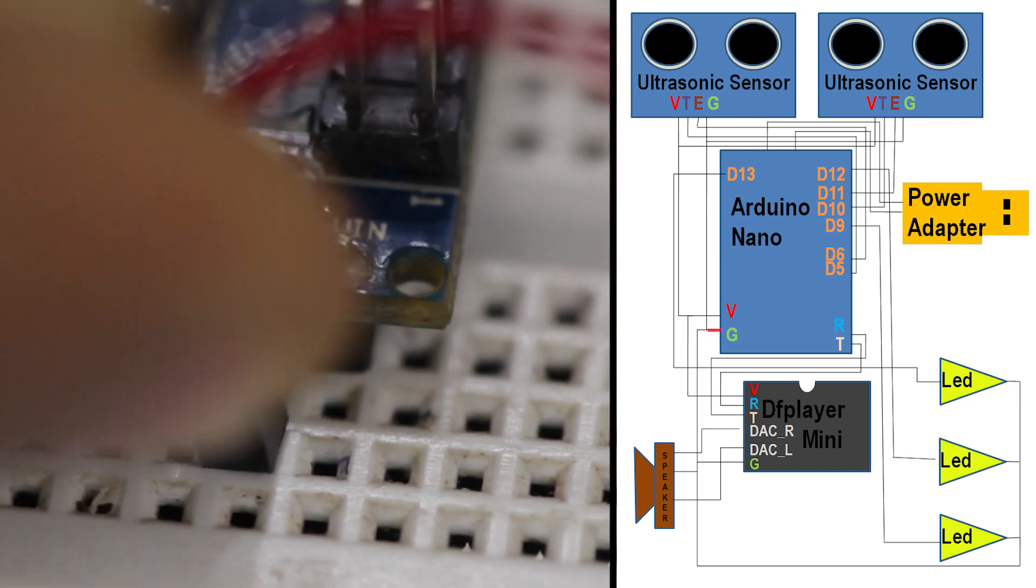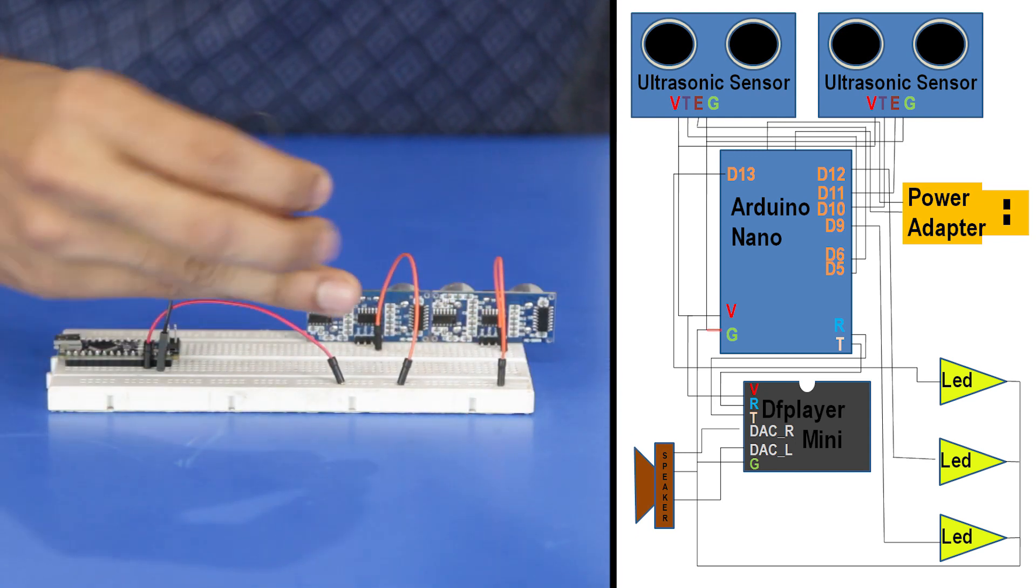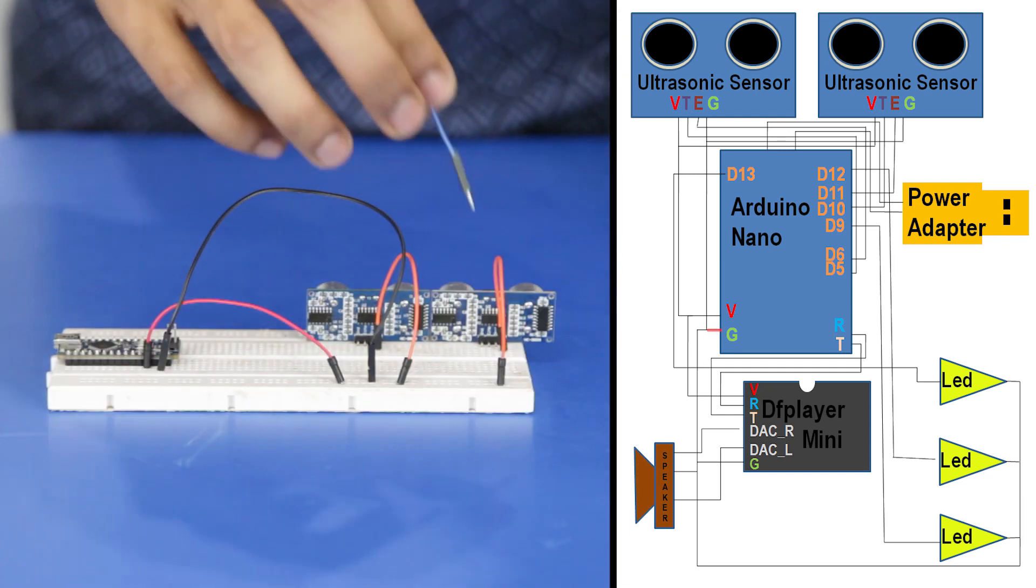Next connect ground from the Arduino to the second rail of the breadboard and connect both ultrasonic sensors to ground.